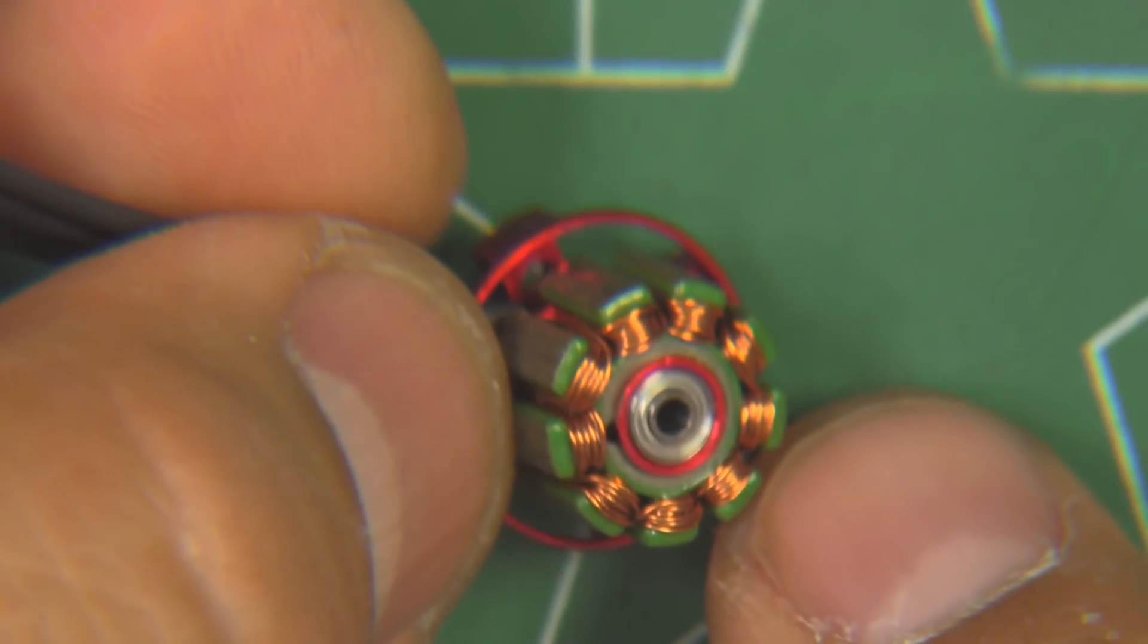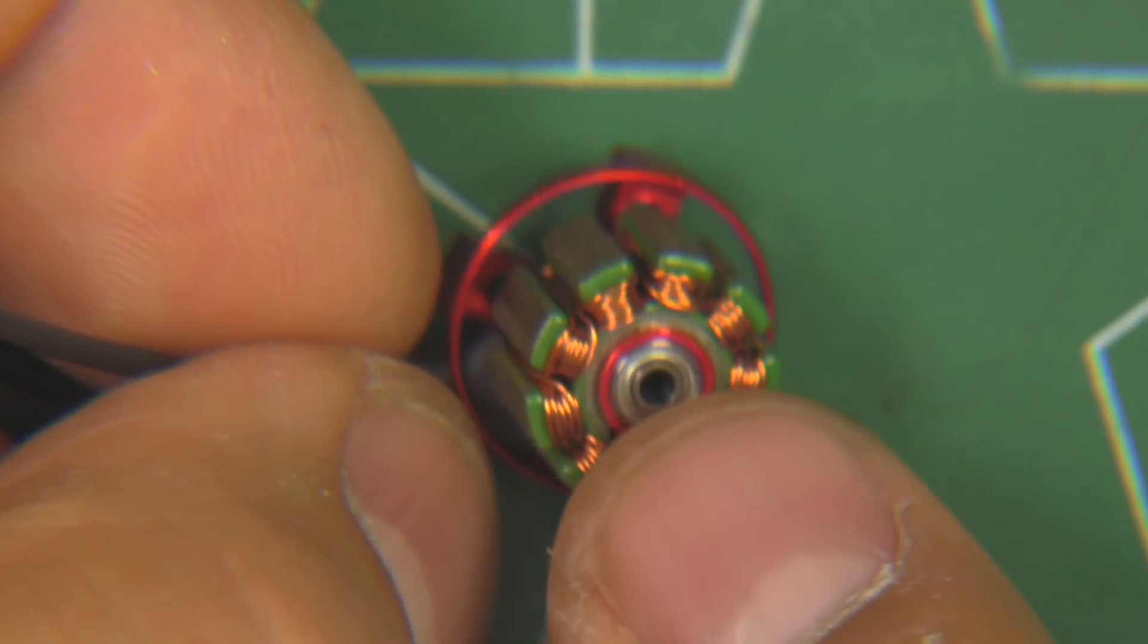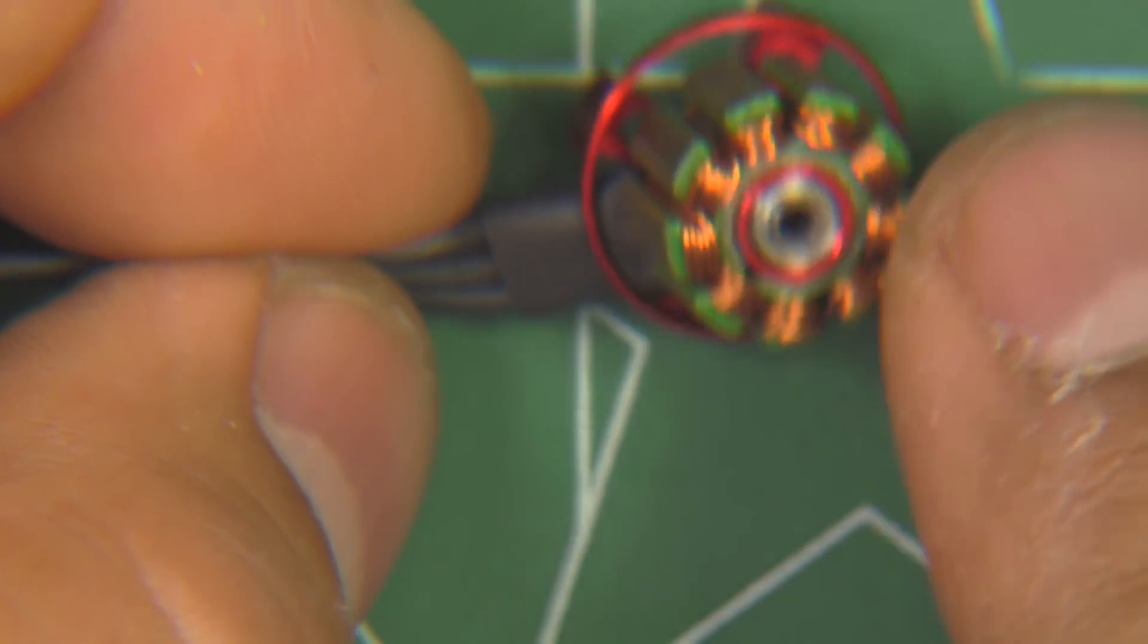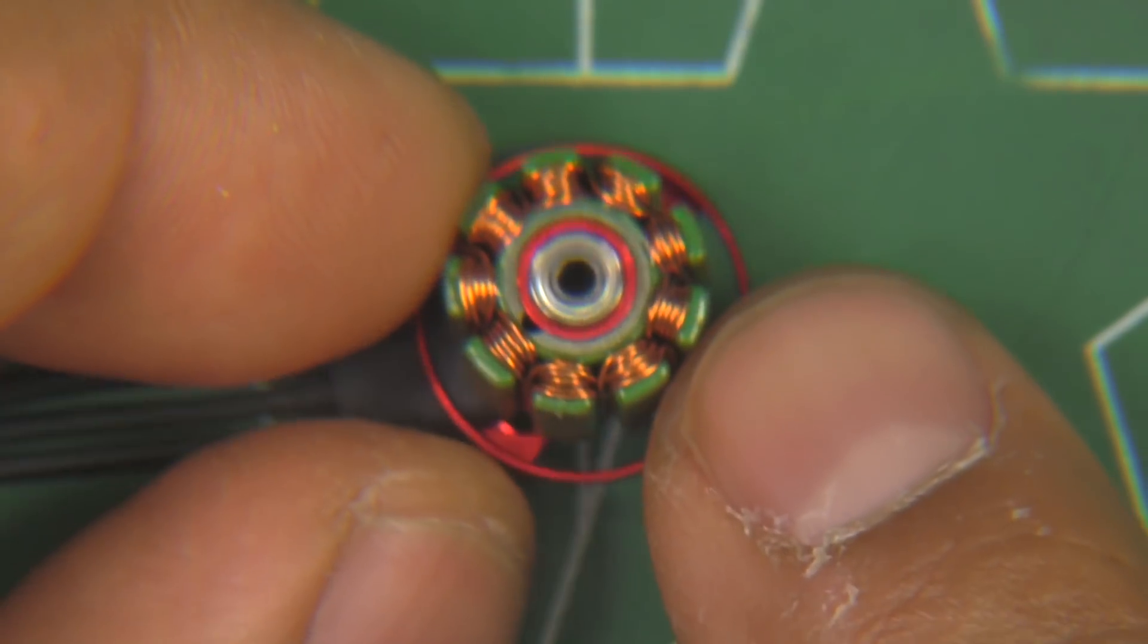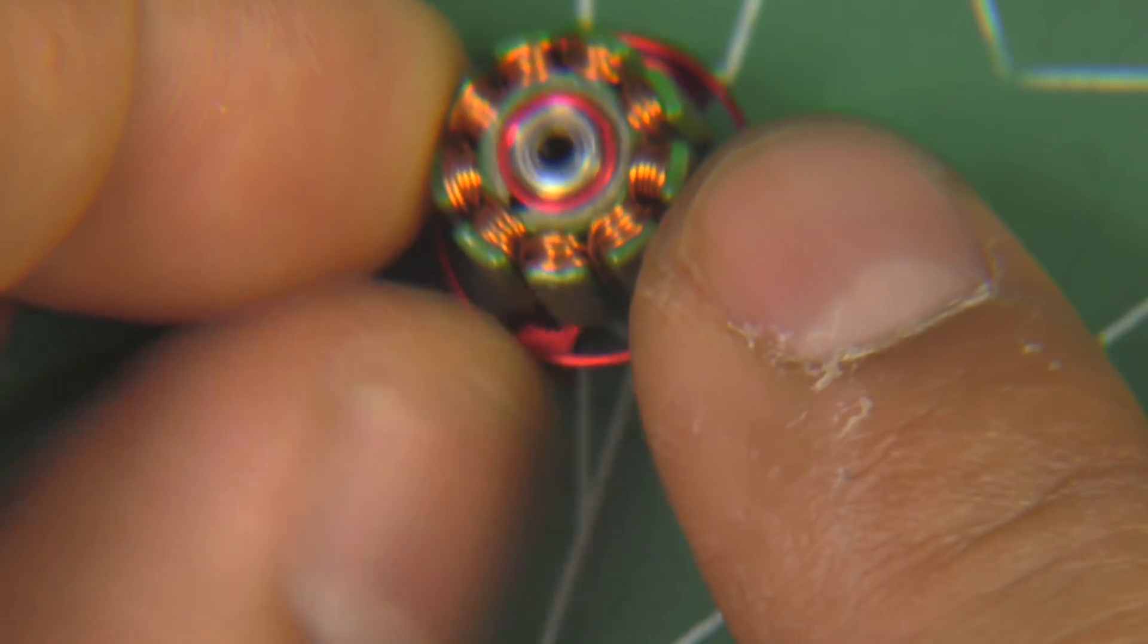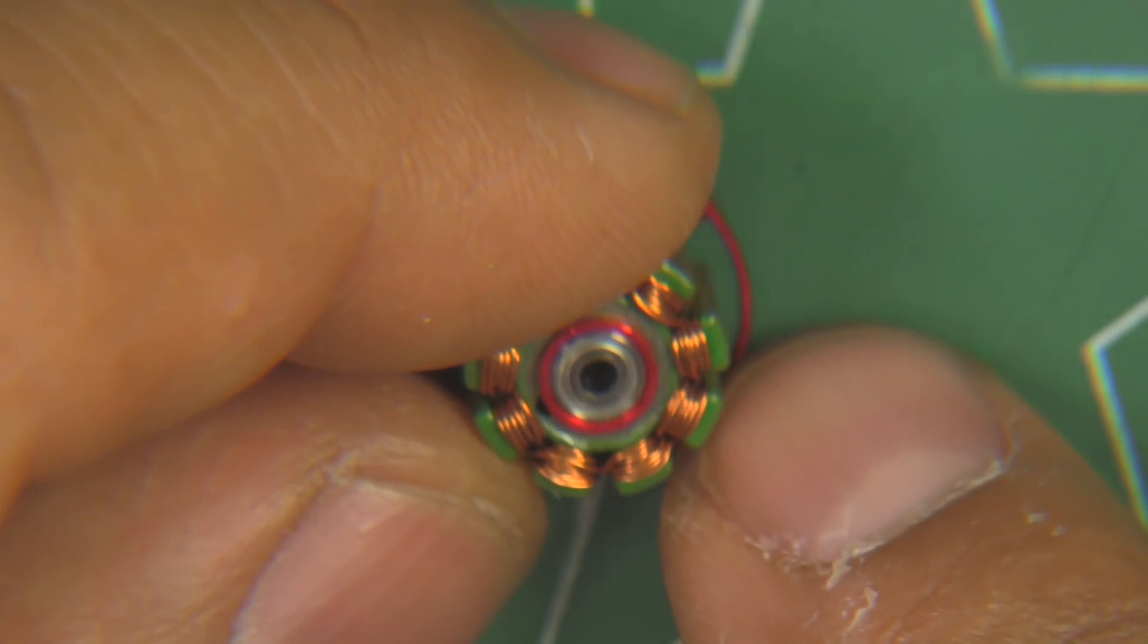As you can see the windings, they look pretty neat, pretty well done. Looks like they are using single strand wire, I believe, kind of hard to tell if it's a single strand or a bundle of two or three on this small scale.